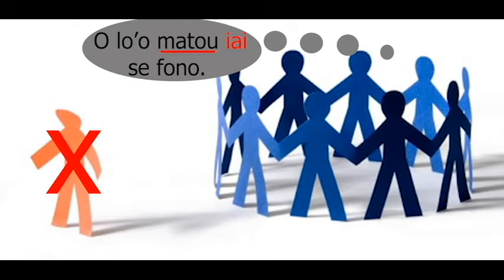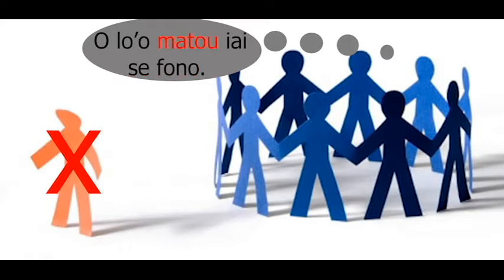Motto ii oloo — motto ii sifono. 'Oloo' is the continuous tense marker. 'Motto' is 'we' or 'us' exclusive. 'Ii' is 'have.' 'Se' is the determiner meaning 'a,' and 'fono' is 'meeting.'